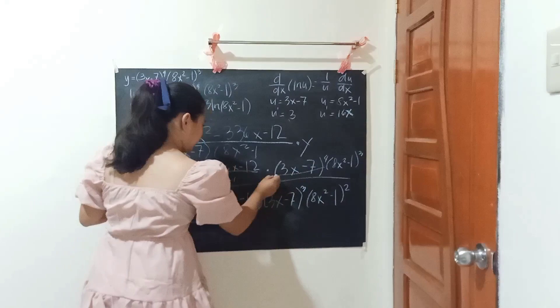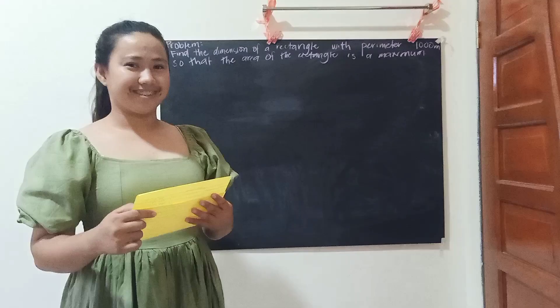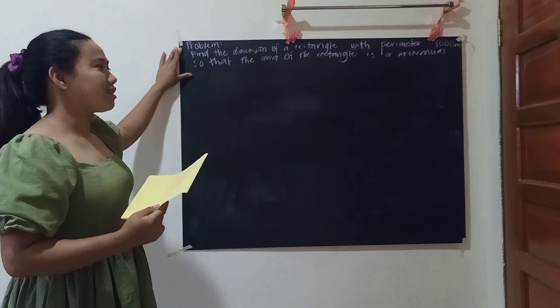Maxima or Minima Problem. Find the dimensions of a rectangle with perimeter 1000 meters so that the area of the rectangle is a maximum. First, draw a figure and indicate the unknown parts.